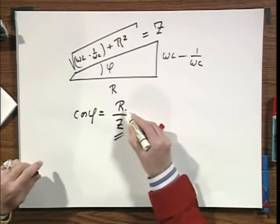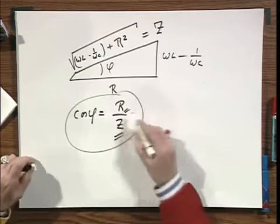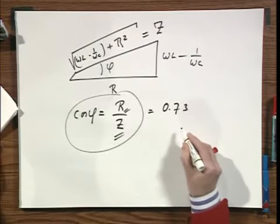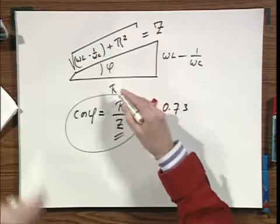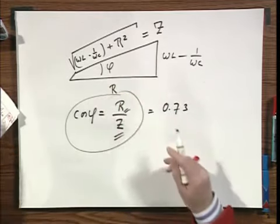Since Z was given, and since R was given, you can find the cosine of phi, which I believe is 0.73. So, it's very easy to go from tangents of phi to cosines of phi.